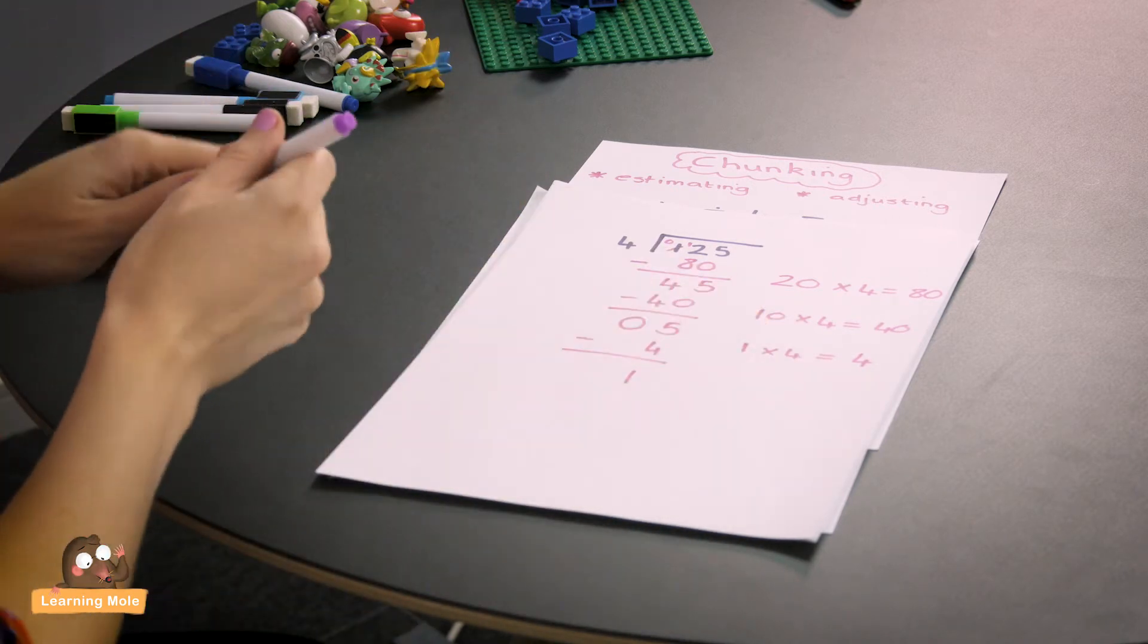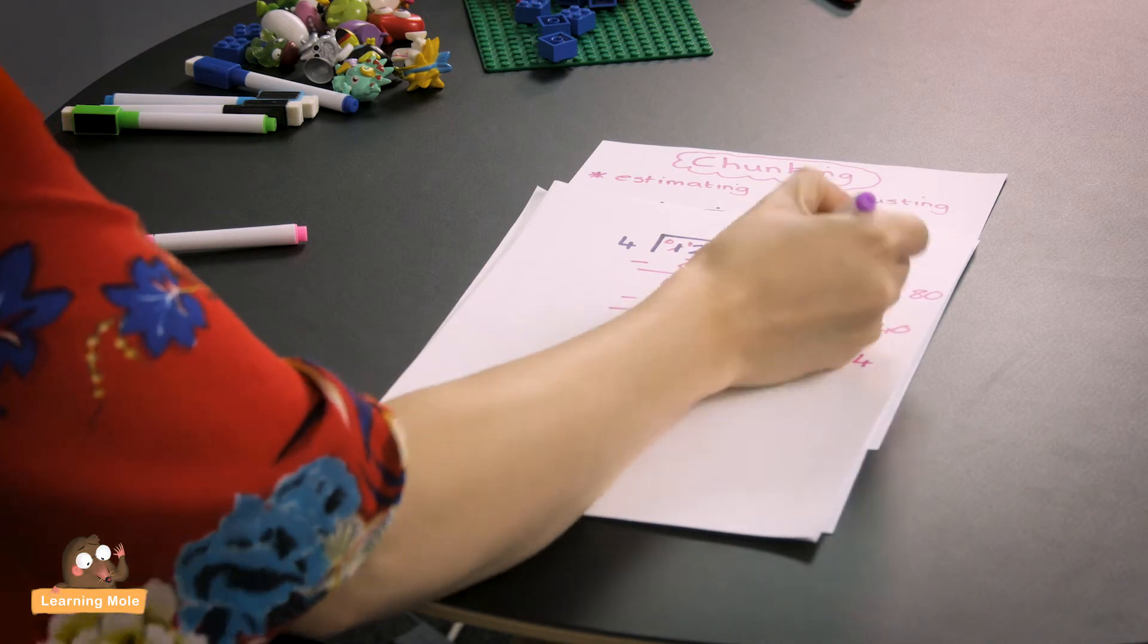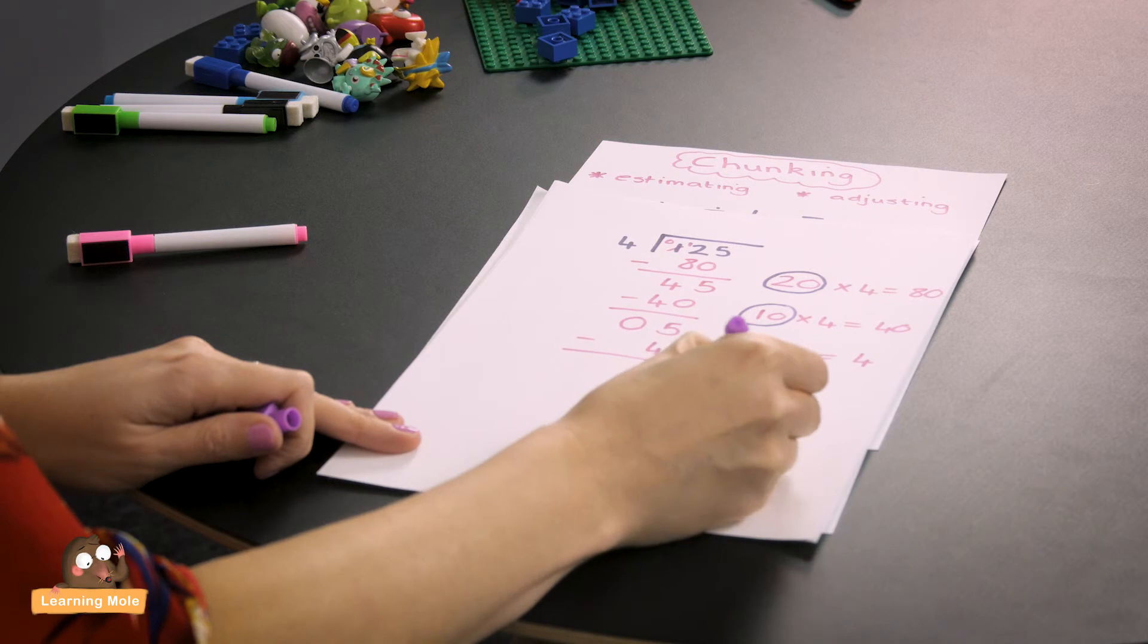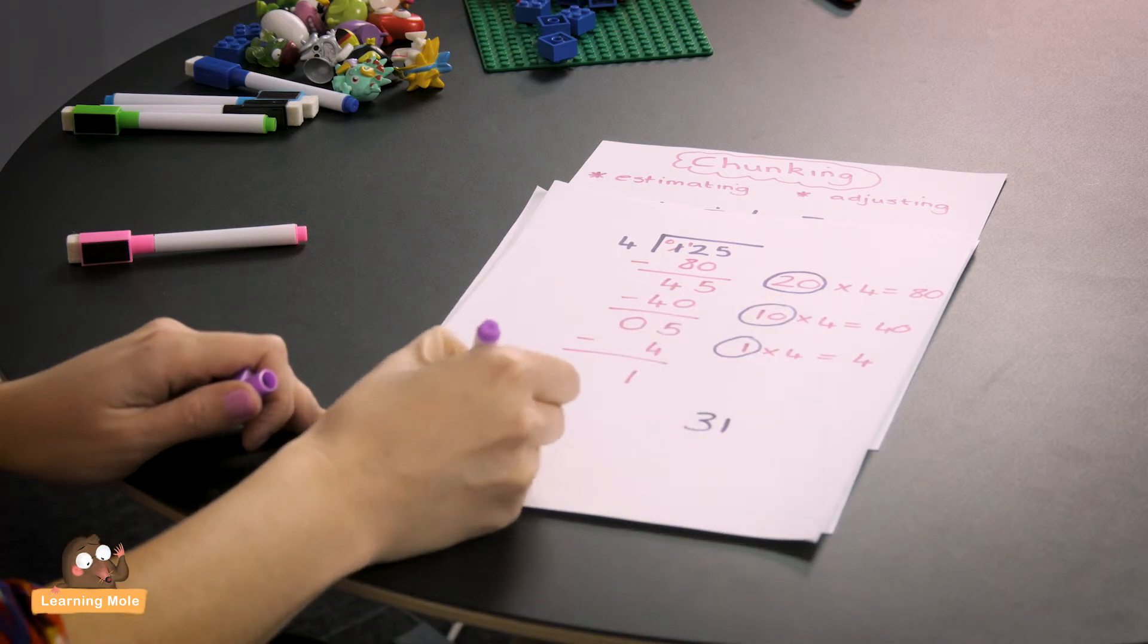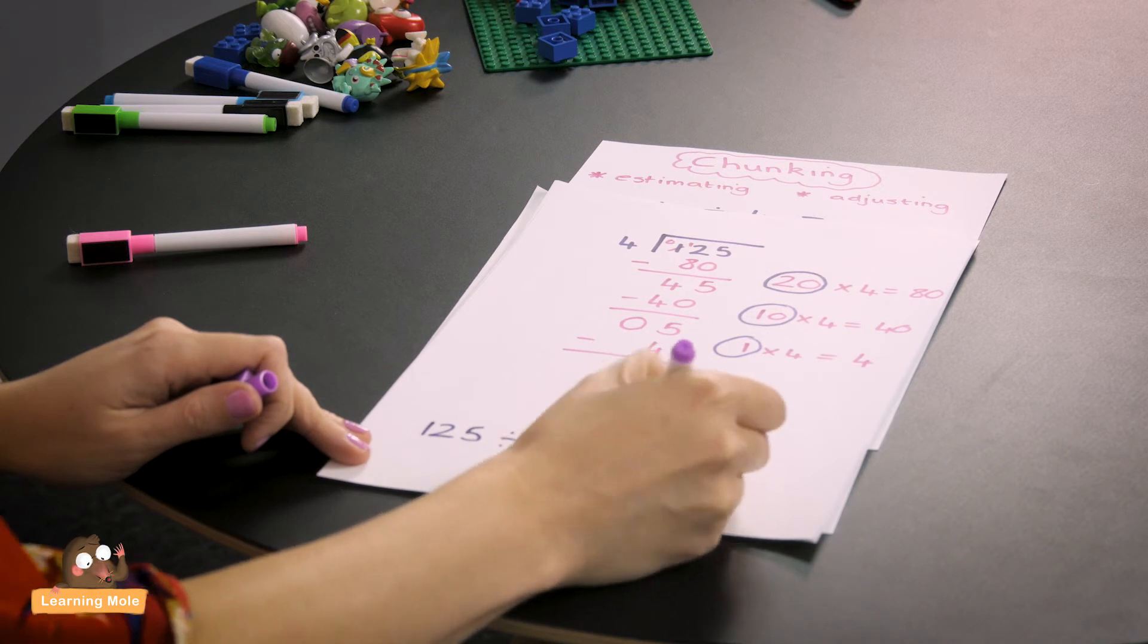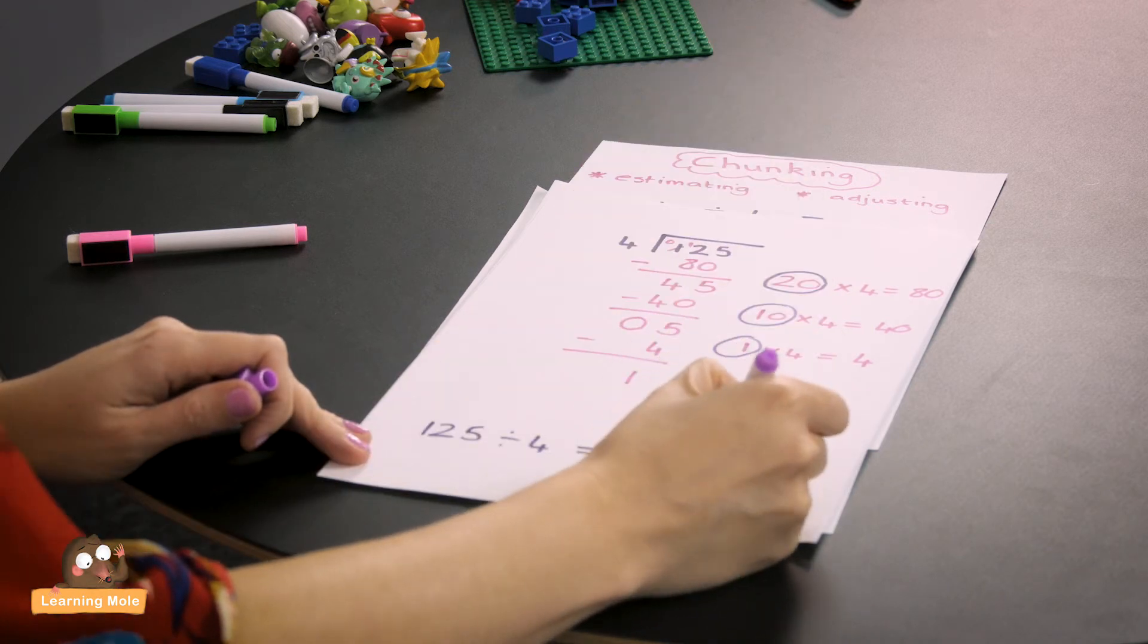So here you'll be recording your 20, your 10 and your 1. You'll be adding those up to get 31. And so my answer is 125 divided by 4 equals 31. And don't forget that remainder, remainder 1. So here you've got the idea of using bigger chunks and that introduction of remainders.